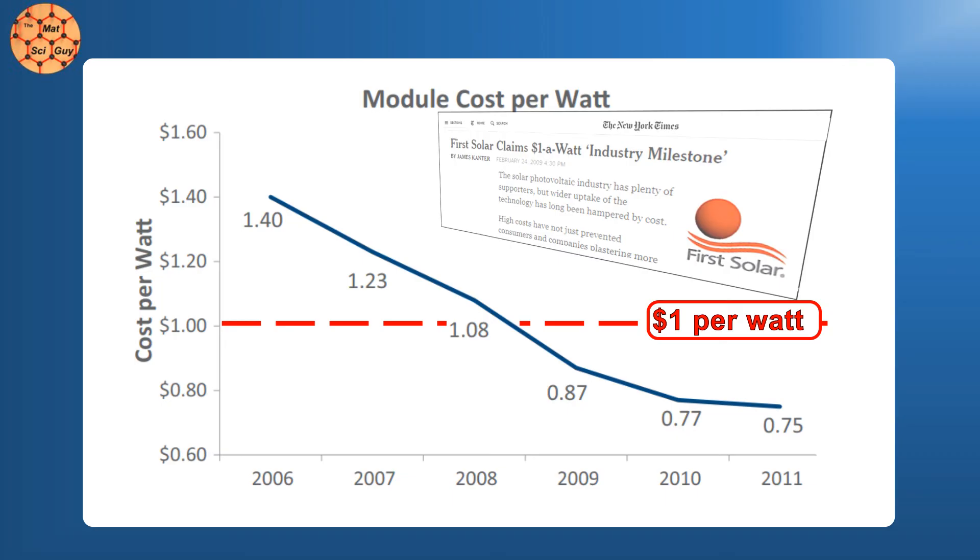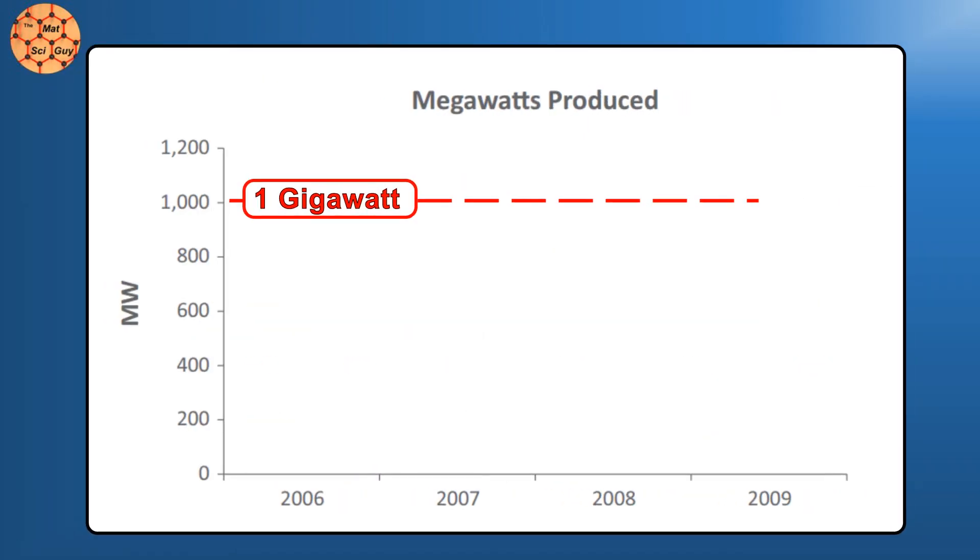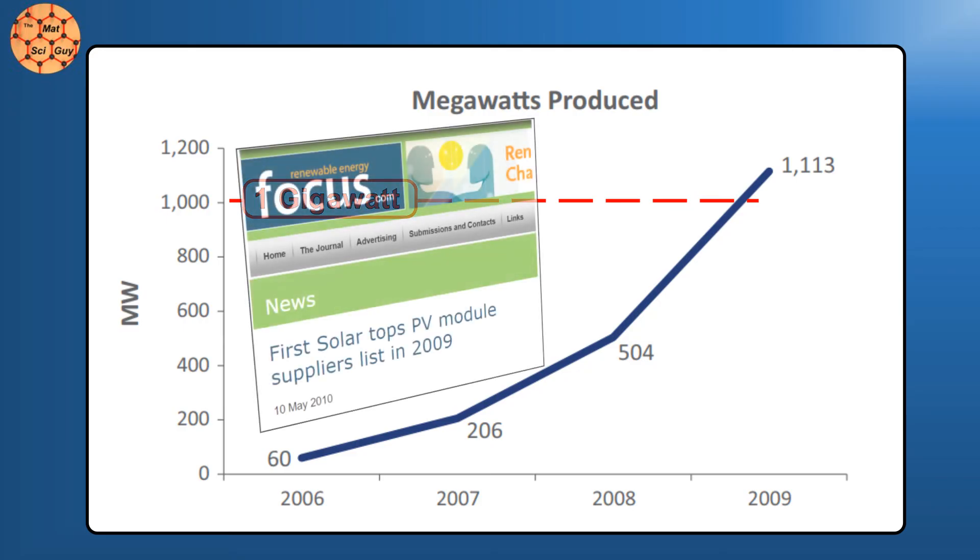In addition to cost advantages, cadmium telluride edged out silicon in environmental impact as well, with an energy payback time calculated to be roughly half that of silicon. The same year, First Solar also became the first solar company to reach an annual production rate of 1 gigawatt, and by some metrics, it was the largest photovoltaic solar company in the world. Cadmium telluride was leading the solar boom.